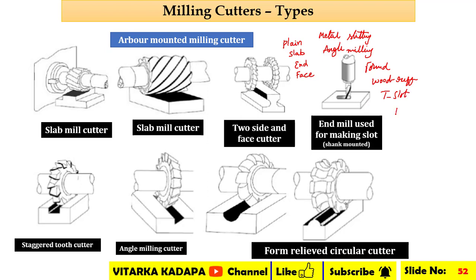The last one is fly milling cutter. Among the milling cutters, if you observe, this is a case of a slab mill cutter. The work piece is at this position, and we need to machine the top surface. The axis of the cutter and the work piece are both parallel, so we can term it as peripheral milling.